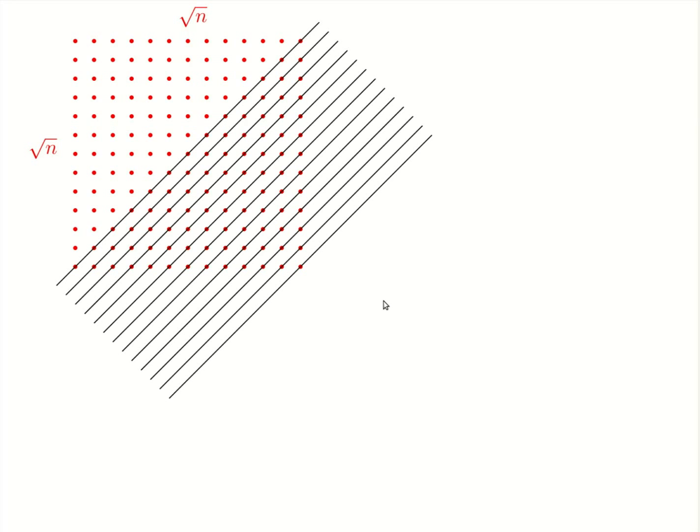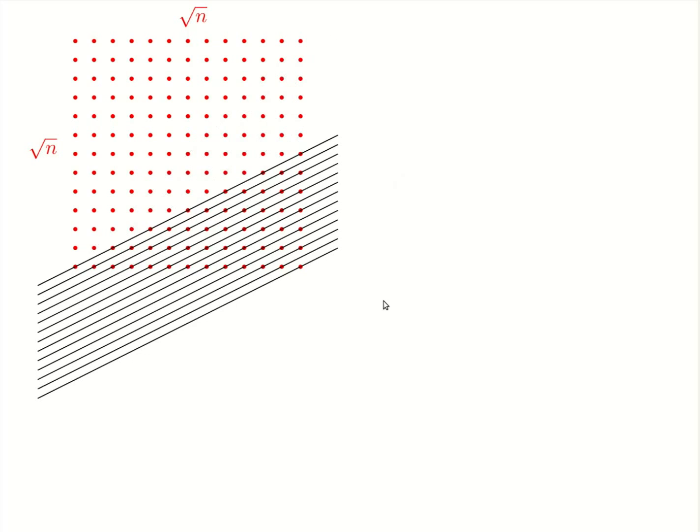In such a grid, we can draw lines that pass through many points. Each such line creates lots of incidences. But as we start to create more and more diverse sets of lines,